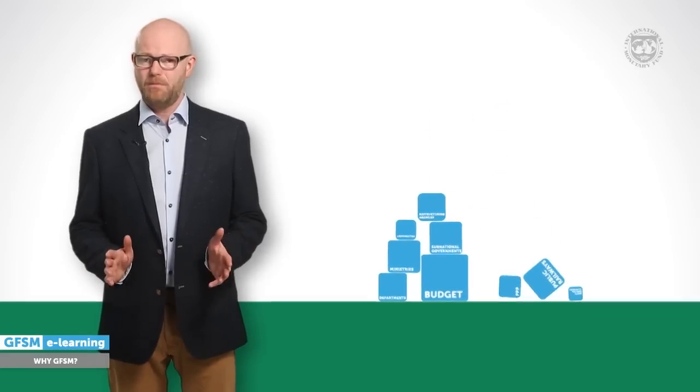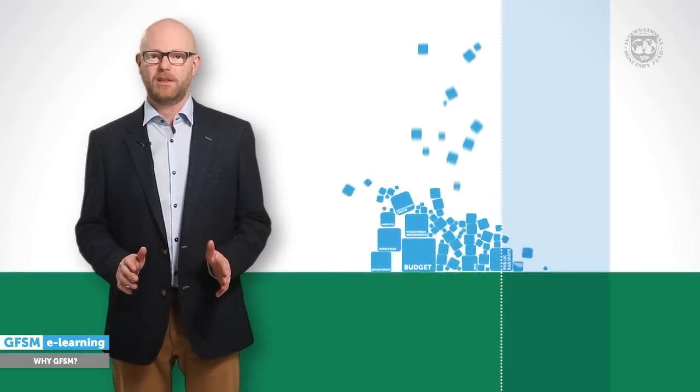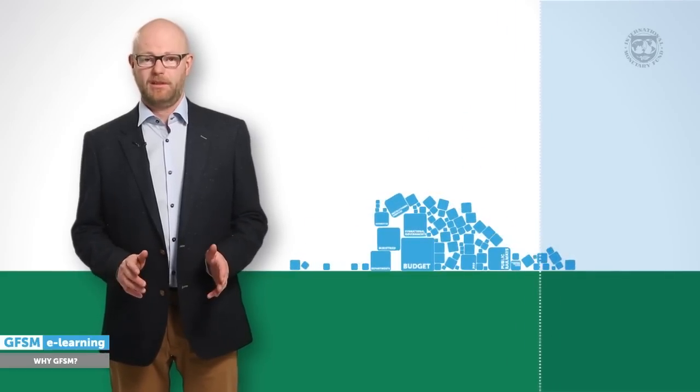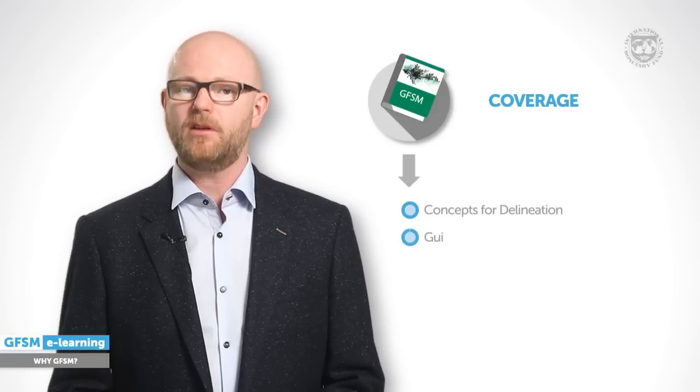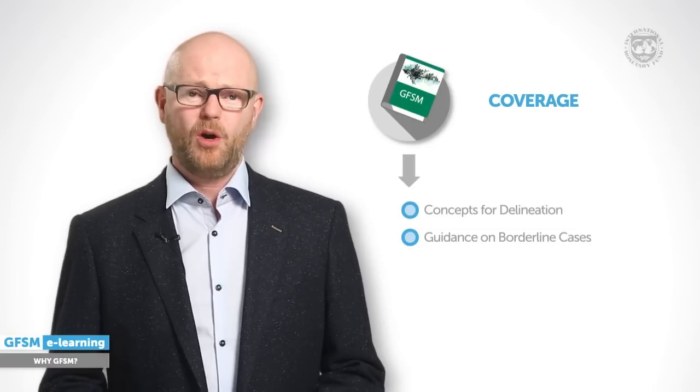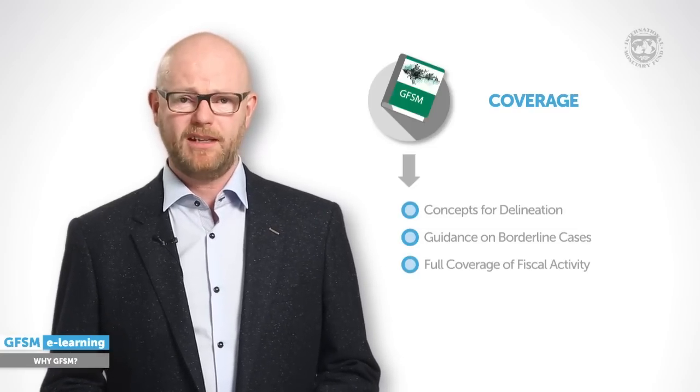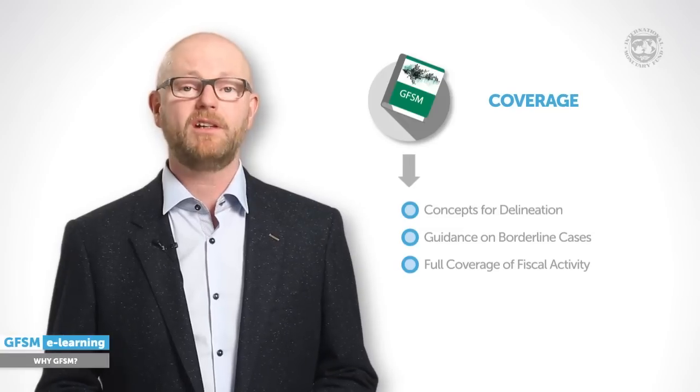Just think of public-private partnerships, the public railways, restructuring agencies, universities, the local waste removal company, to name just a few. Often there are many, many more such units, sometimes tens of thousands within a single country. All of these units will need to be examined. Determining the sector a unit belongs to is a challenge — this is not always obvious, yet the decisions can, and often do, have a material impact on key fiscal measures such as the fiscal balance or government debt. The GFSM provides clear concepts to delineate the general government and public sector and gives guidance on many borderline cases encountered in practice. All relevant fiscal entities in a country should be captured and data can be compared across countries irrespective of legal or institutional setups.